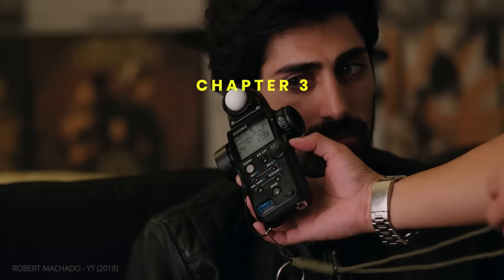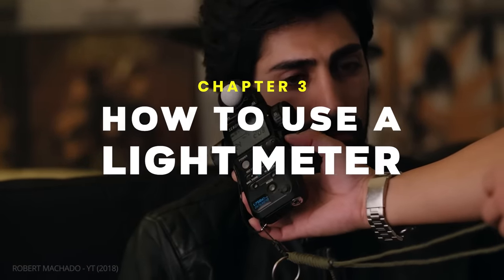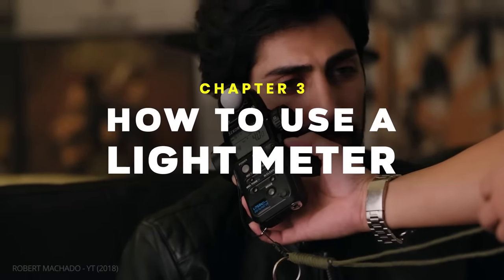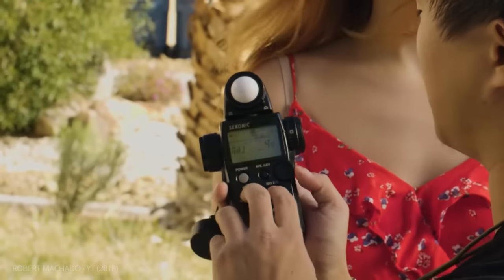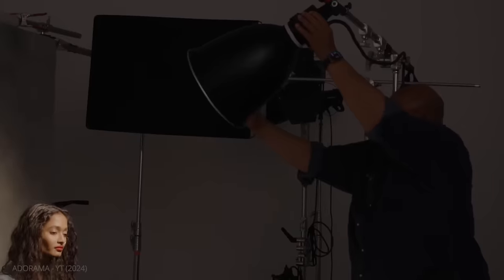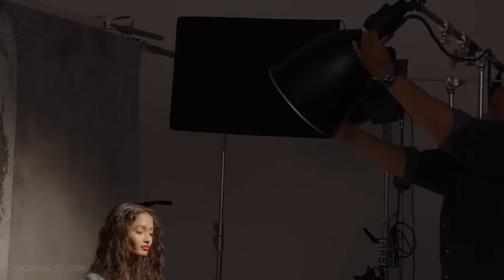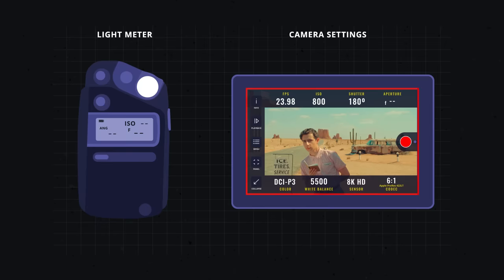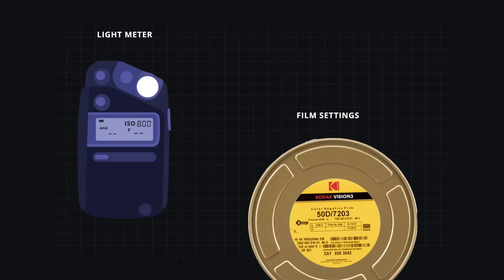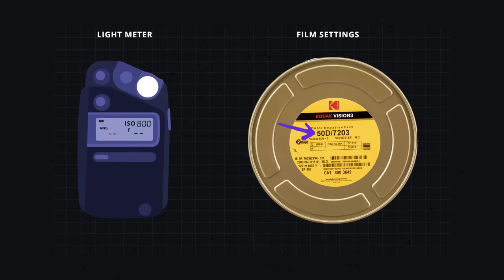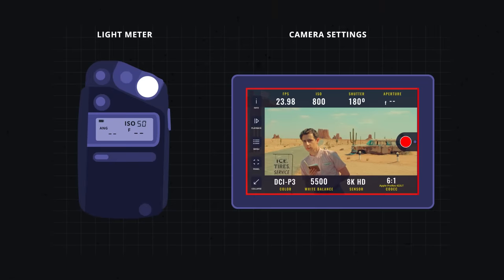Of course, a light meter is only useful if you know how to use it. Using a meter is relatively straightforward, but there are a few factors to keep in mind. First, set the device to the same ISO as your camera. If you're shooting on film, match the ISO to the roll of film. Next, match your shutter speed and shutter angle to the same as your camera.